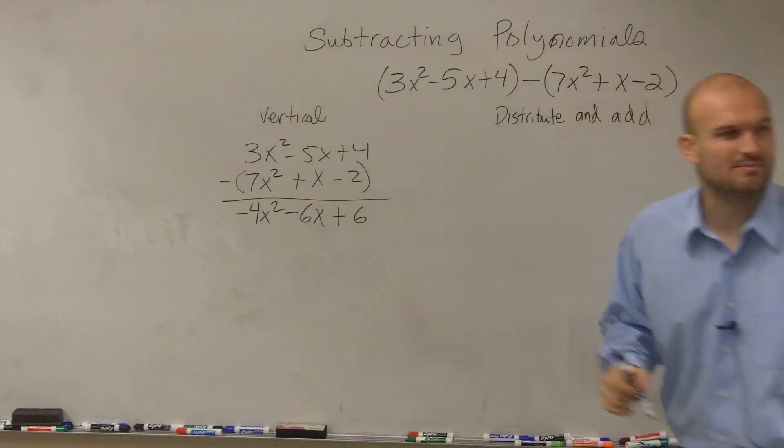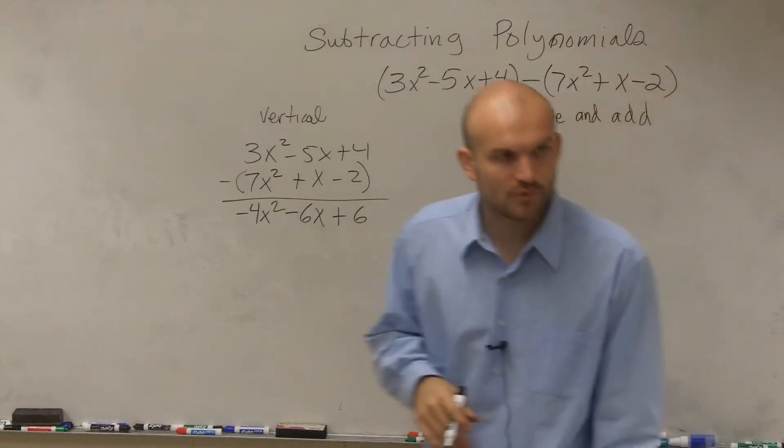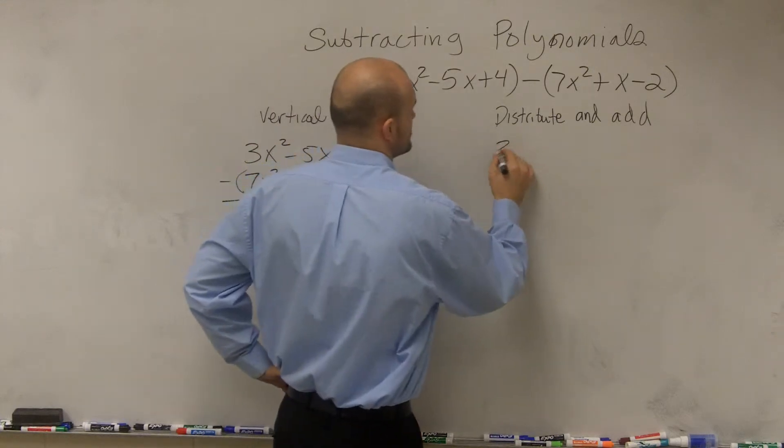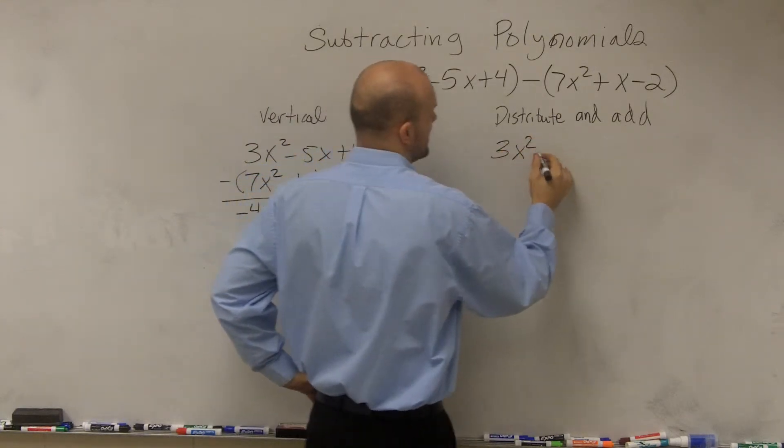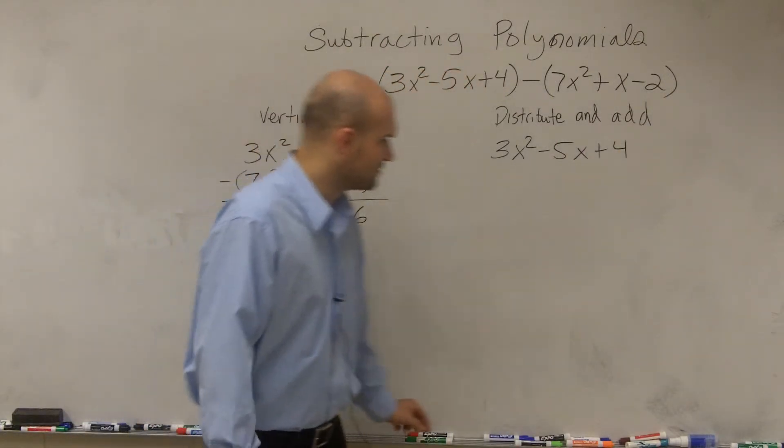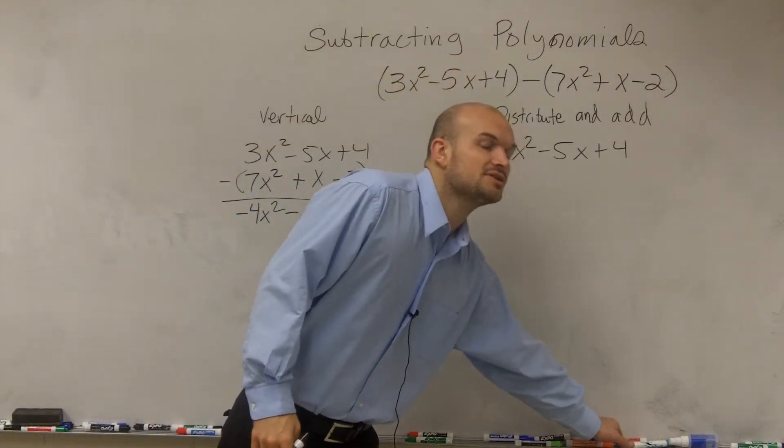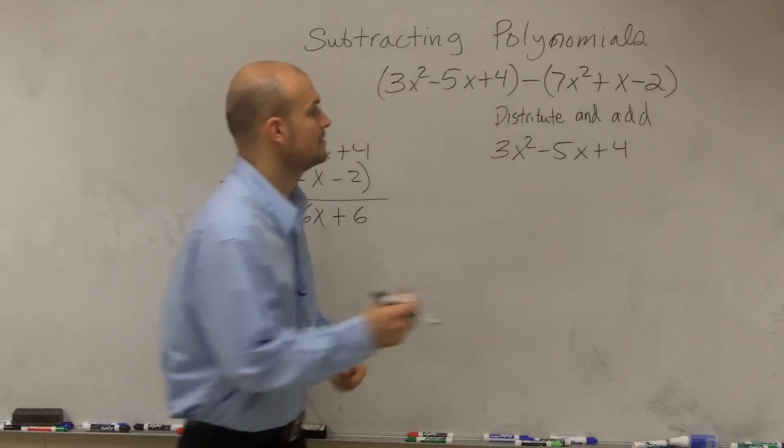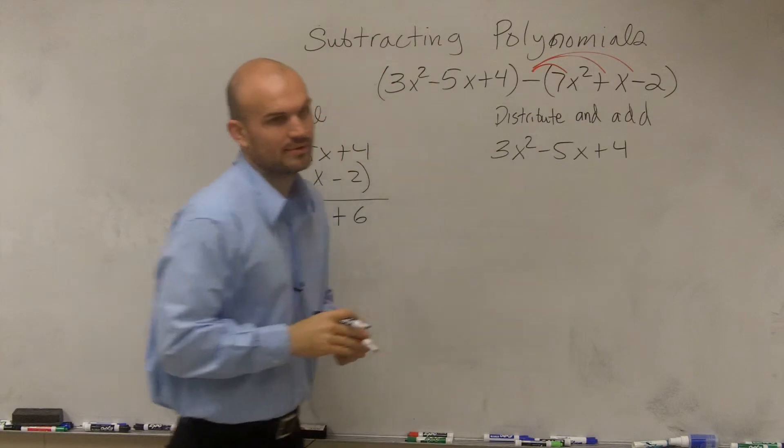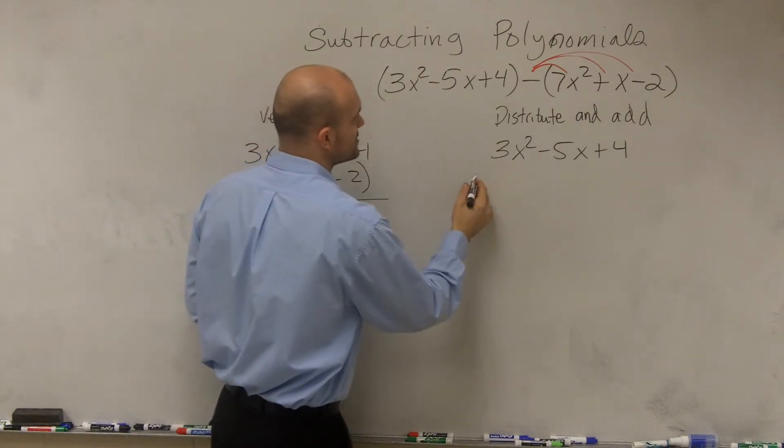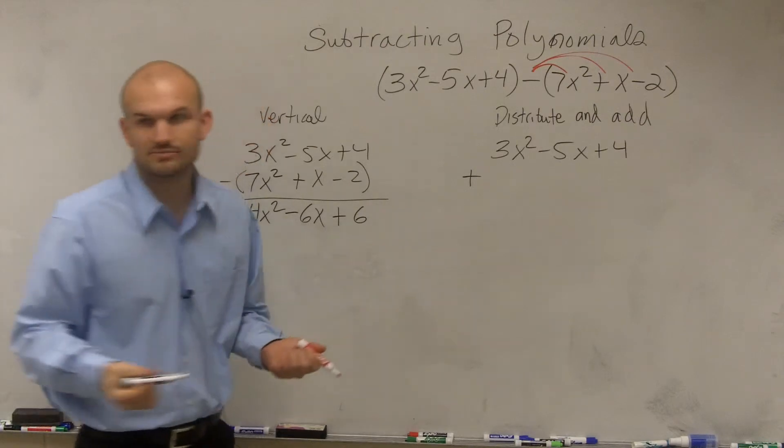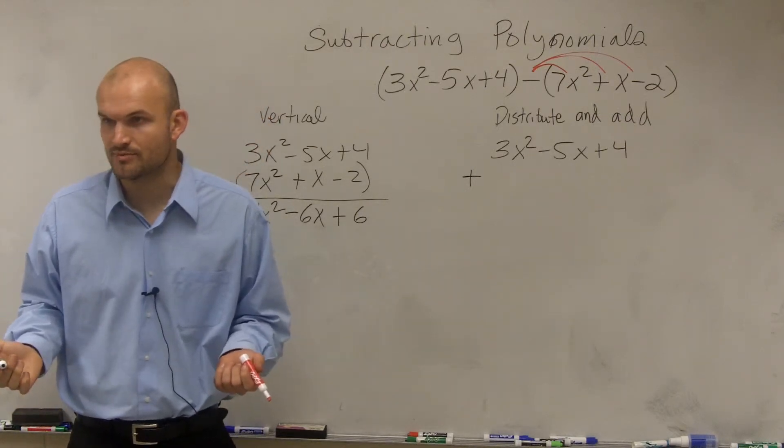So what do I mean by that? Well, what I'm going to do is I'm going to first write the first term. So when you write this down, you have 3x² minus 5x plus 4. That's your first term. Now, the next thing what you can do is you can distribute the negative sign. So you can apply the negative sign to every single term. And by doing that, we can now change this to an addition problem. Because every subtraction problem can be rewritten as an addition problem.